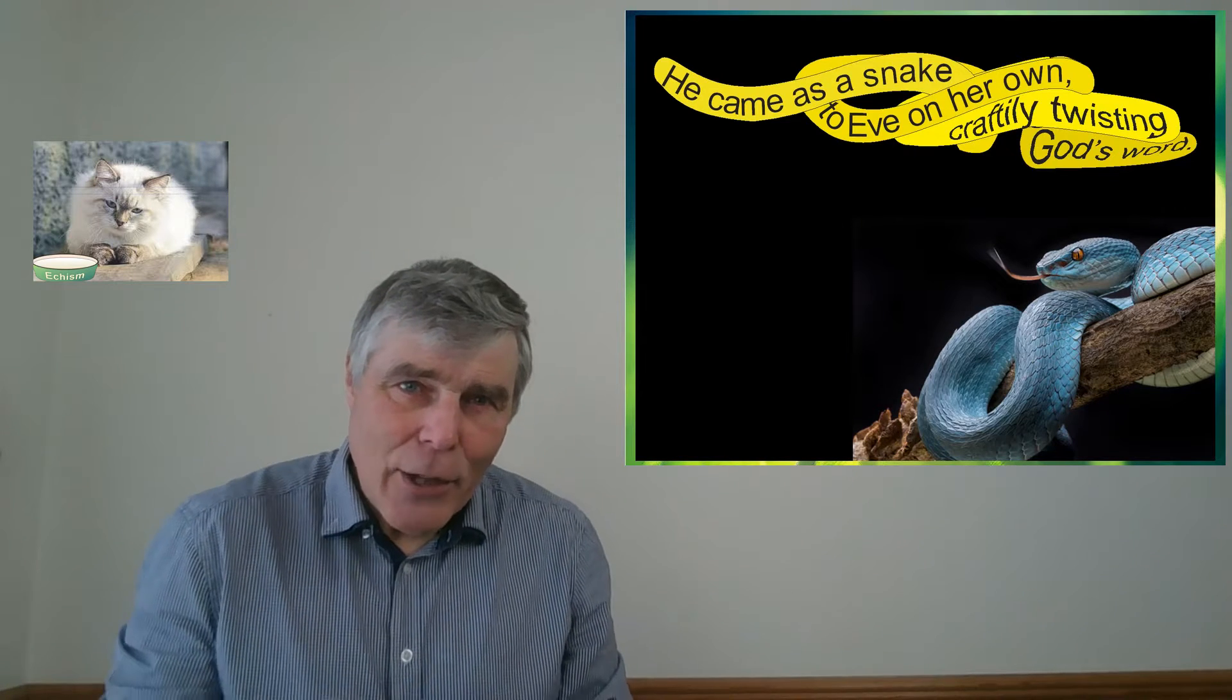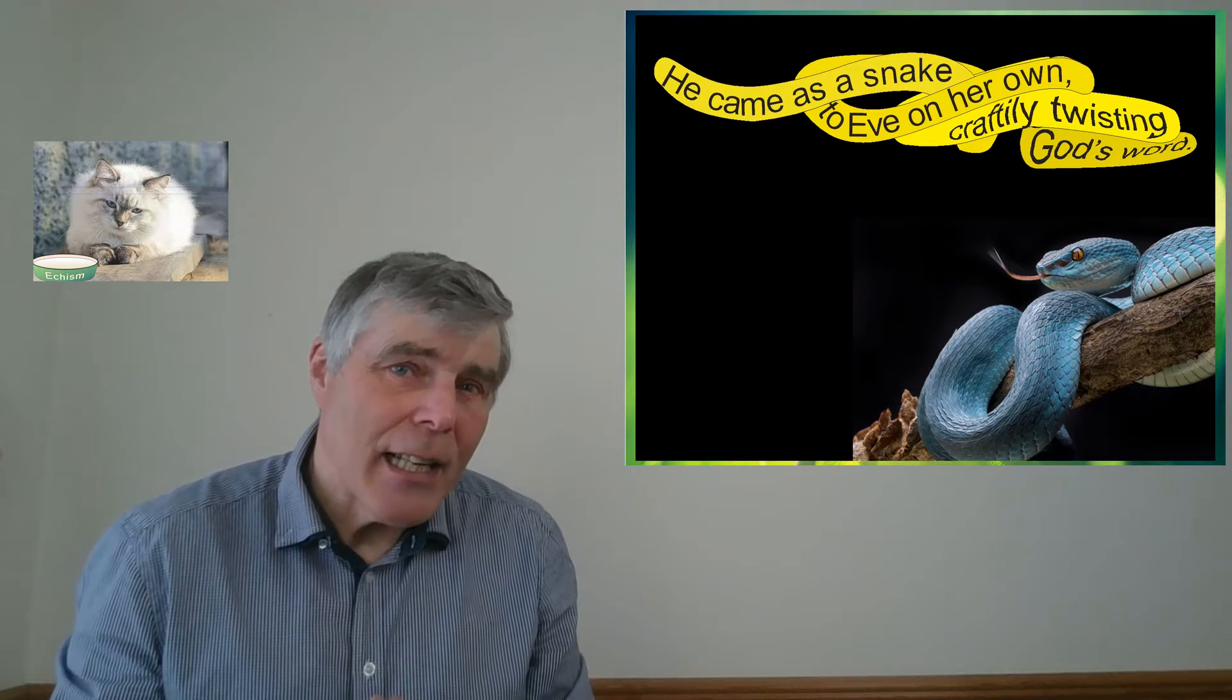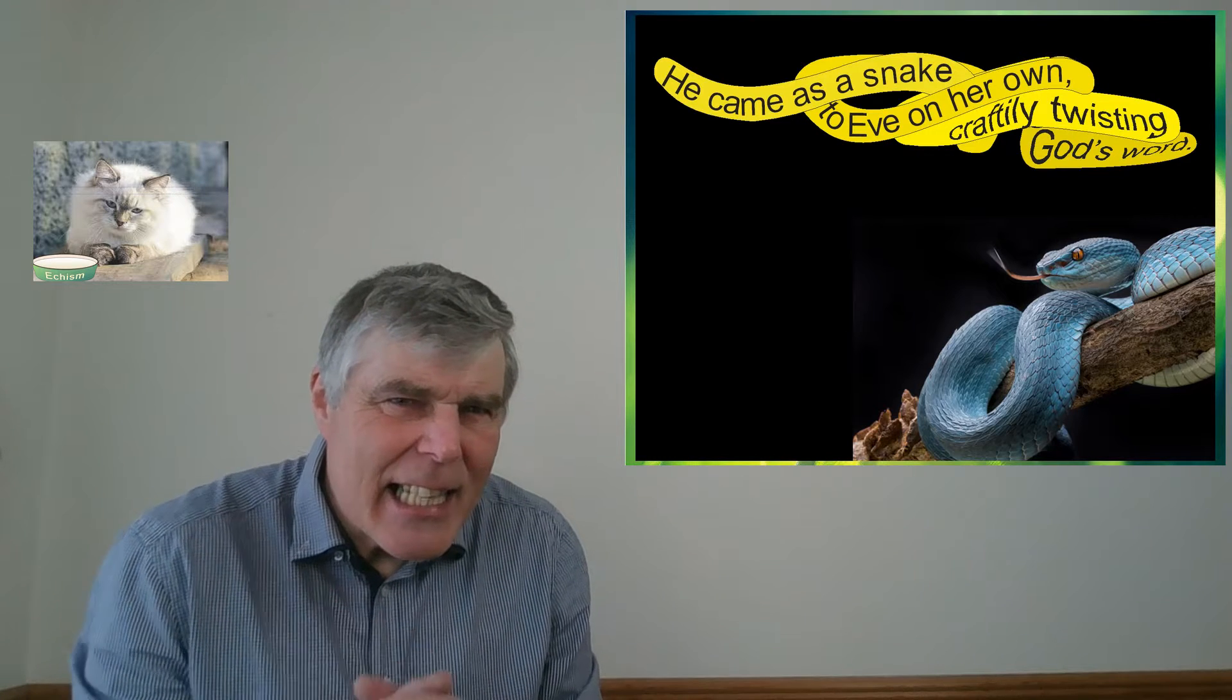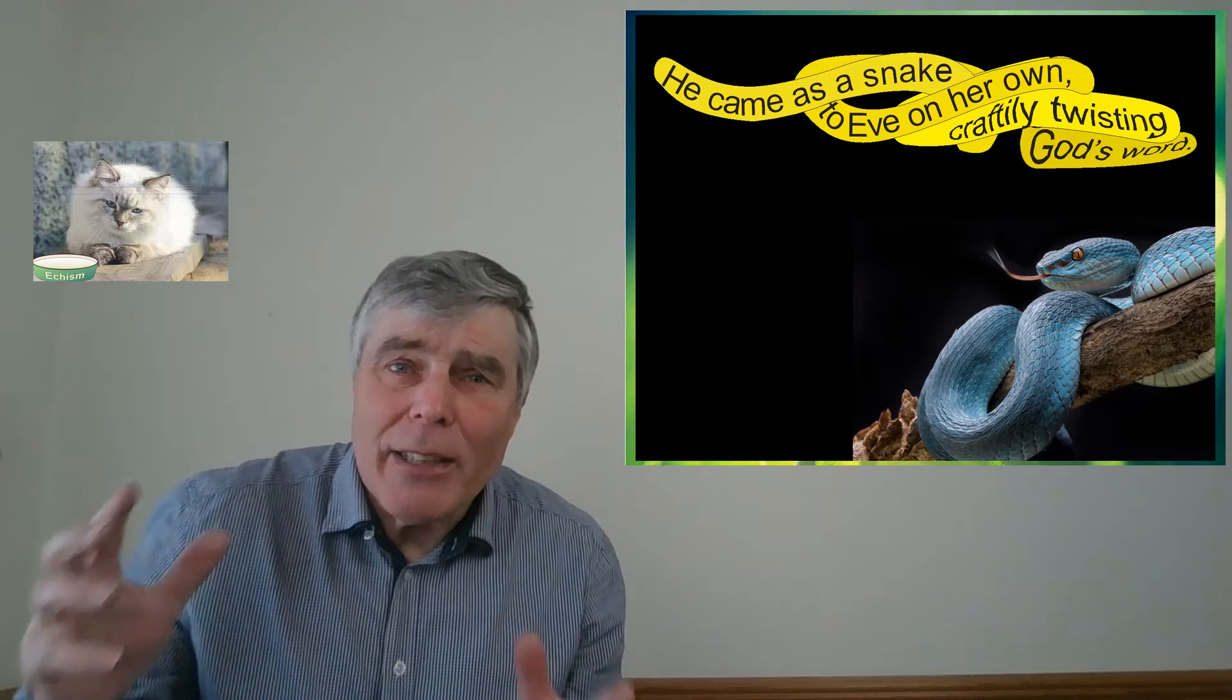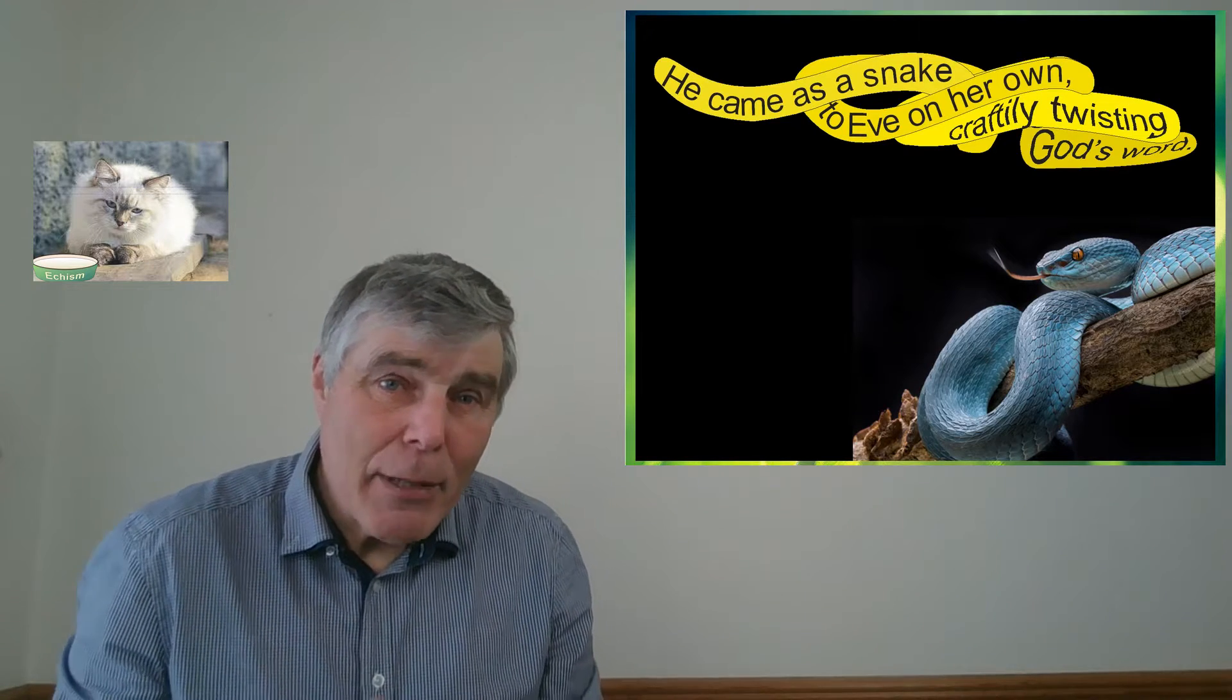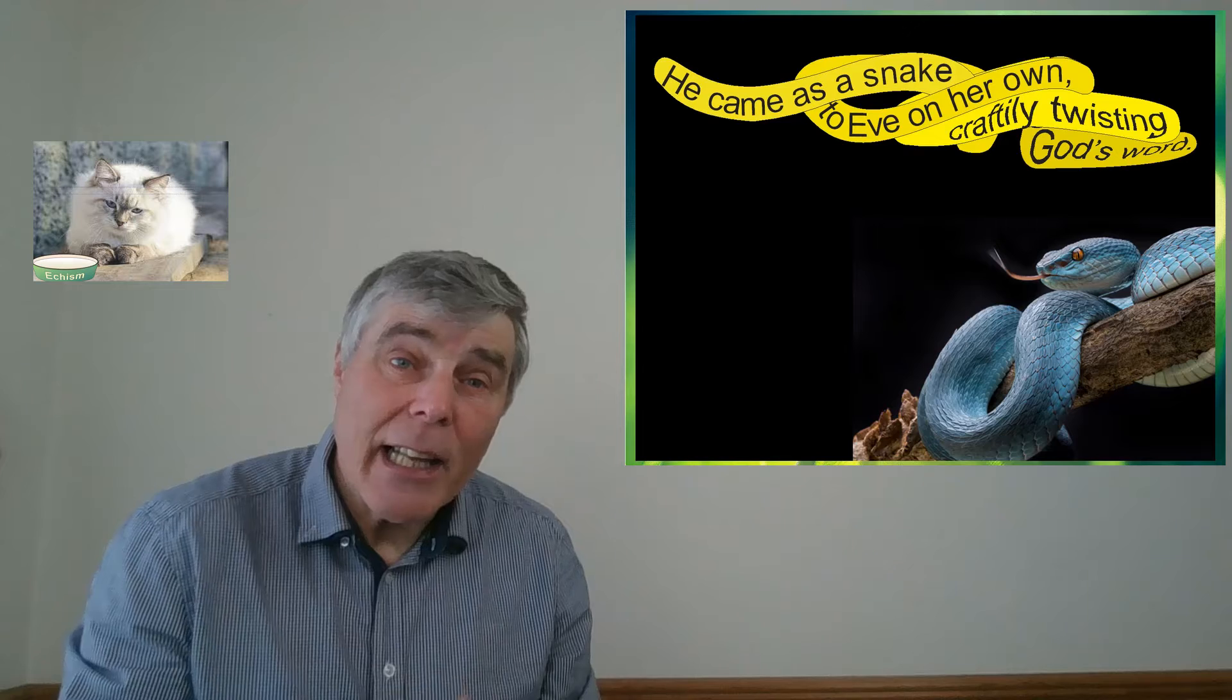Then when he thought he had won her confidence, he continued his sneaky deception. Perhaps when walking through part of the garden that had an abundance of different fruits, he was careful to point out how many there were.